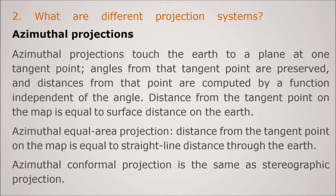What are different projection systems? There are various projection systems. Let us start with the azimuthal projection. So this azimuthal projection touches the earth to a plane at one tangent point. Angles from the tangent points are preserved and distances from that point are computed by a function which is independent of this angle. Distances from the tangent point on the map is equal to surface distance on the earth. Azimuthal equal area projection is there. The distance from the tangent point on the map is equal to the straight line distance through the earth.